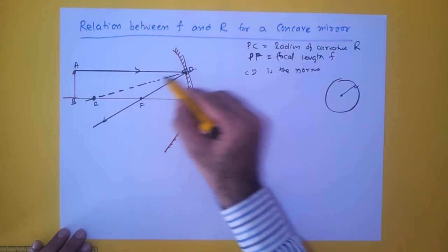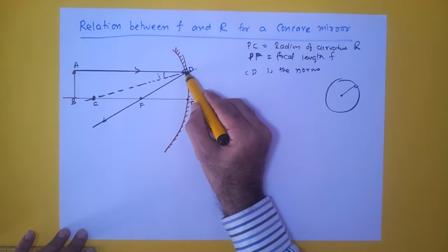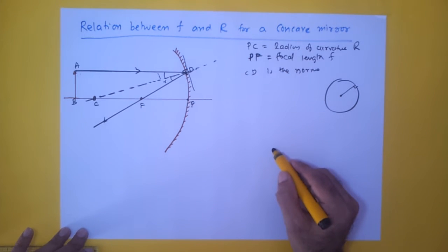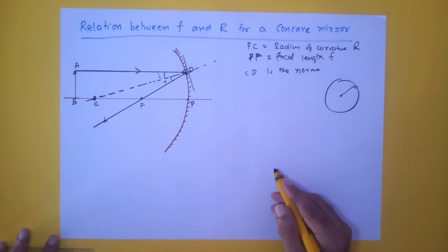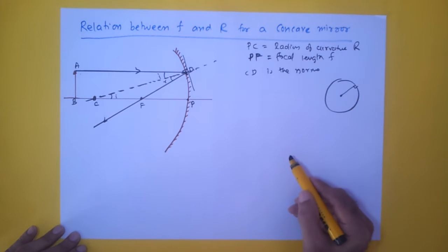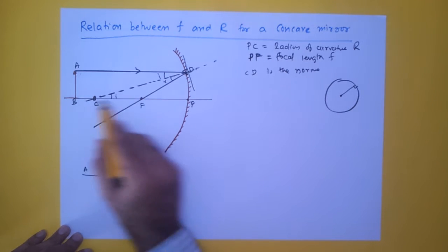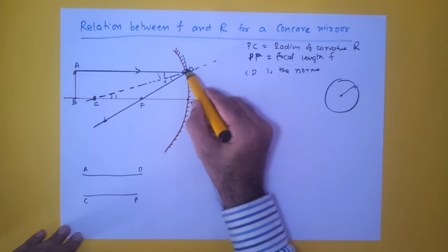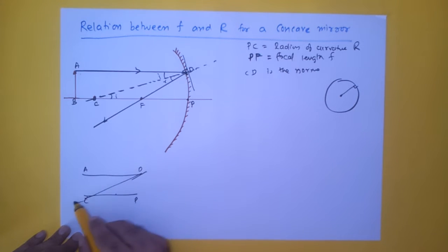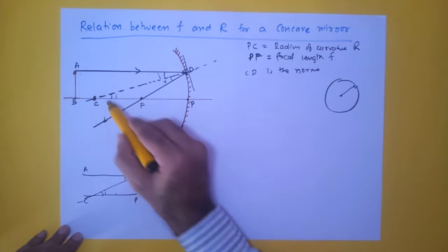Since CD is the normal, the angle between the incident ray and CD is the angle of incidence, and the angle between the reflected ray and CD is the angle of reflection. Using geometry: if this angle is I, then the alternate angle at D — using AD and CP as parallel lines with DC as a transversal — is also I. So both alternate angles equal I.